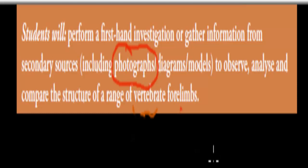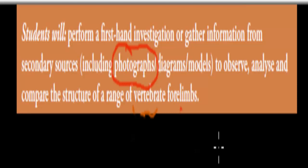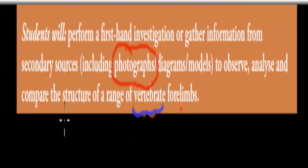The syllabus point is: students will perform a first-hand investigation or gather information from secondary sources, including photographs, diagrams, and models, to observe, analyze, and compare the structure of a range of vertebrate forelimbs. First, the word vertebrate — that is anything that has a backbone.